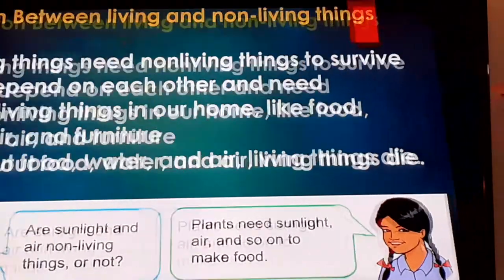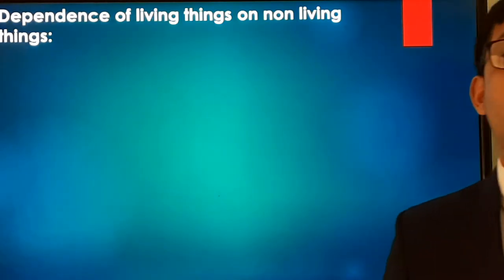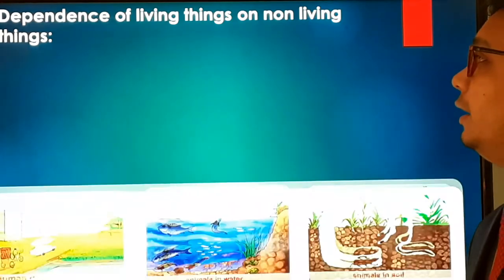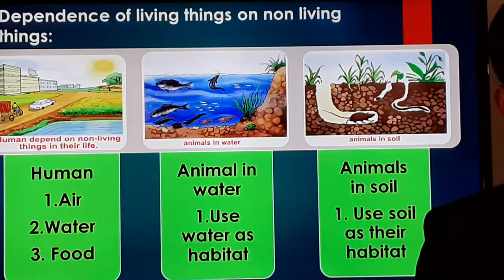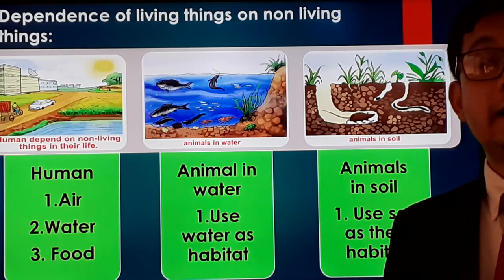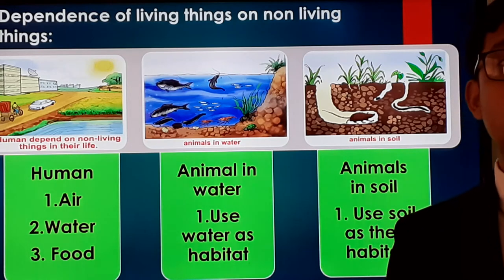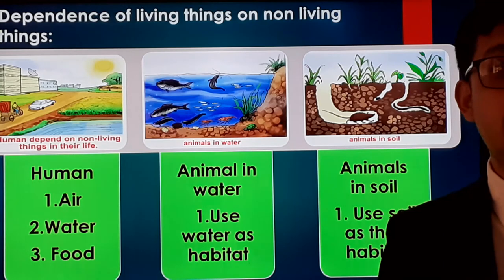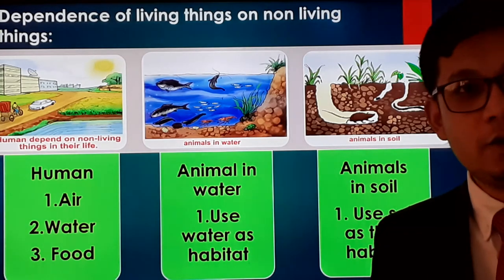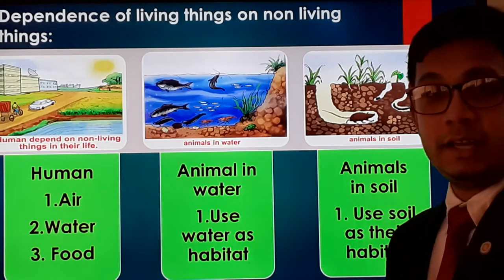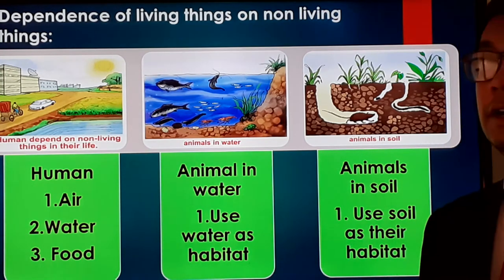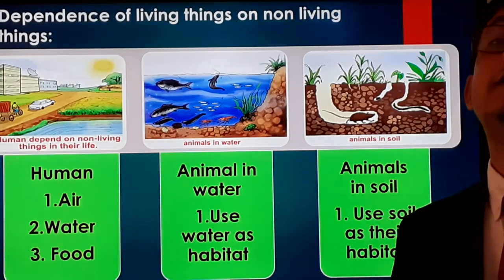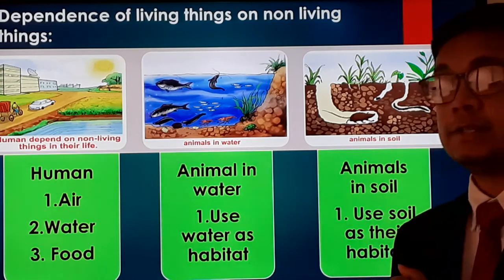Now let's learn about the dependence of living things on non-living things. As human beings, we need air — without oxygen no human can survive. We also need water — water is our life. And we need food — without food we also cannot survive. From this we can say that human beings are hugely dependent on non-living things.